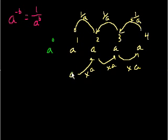So if we go from a to the 1st, which is just a, and divide by a. So we're just going to divide it by a. What is a divided by a? Well, it's just 1.